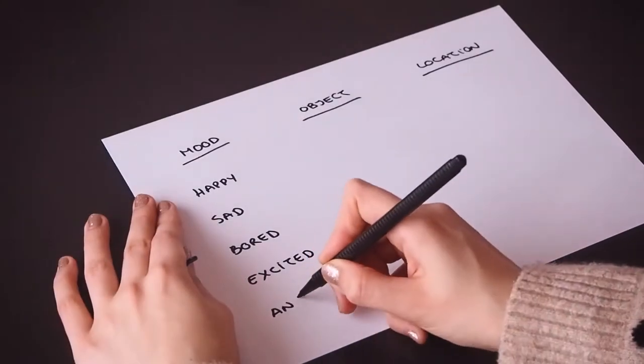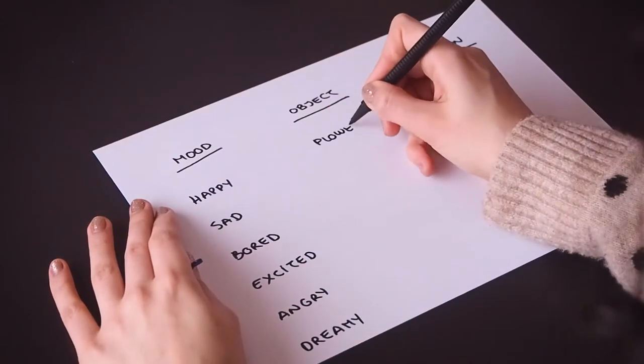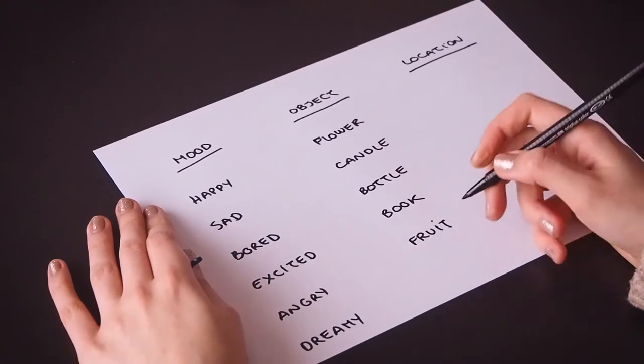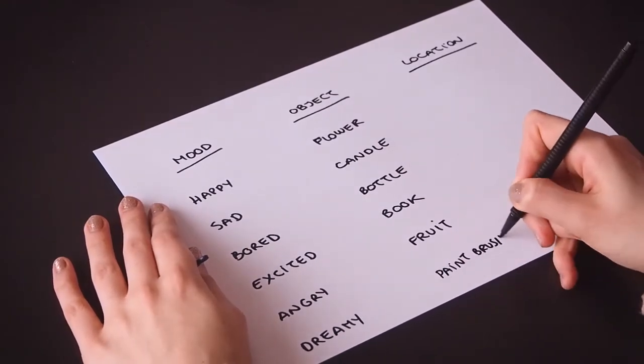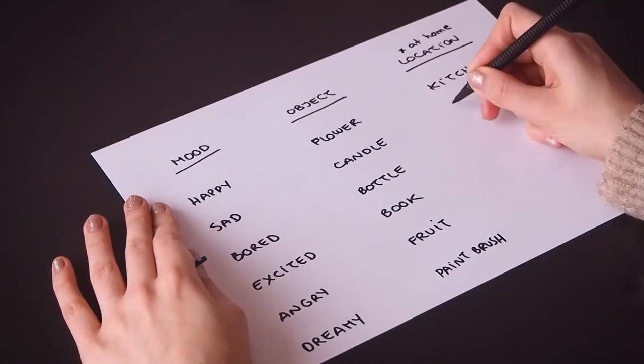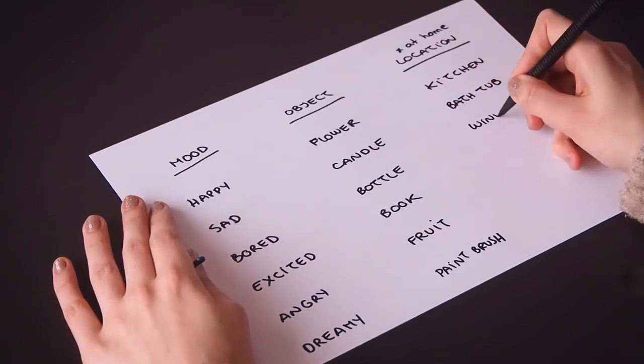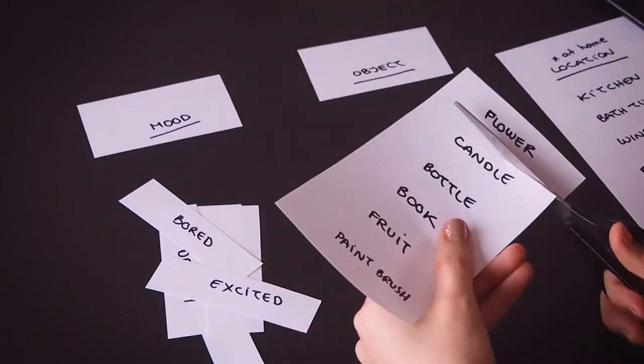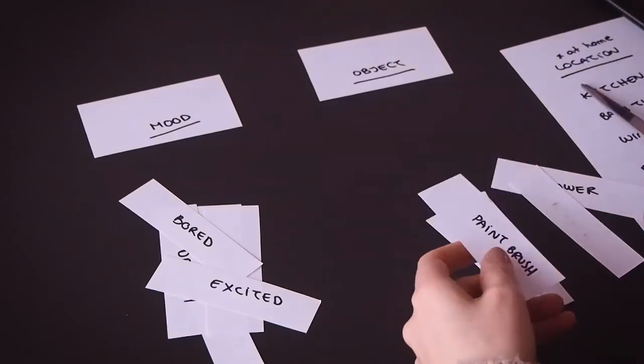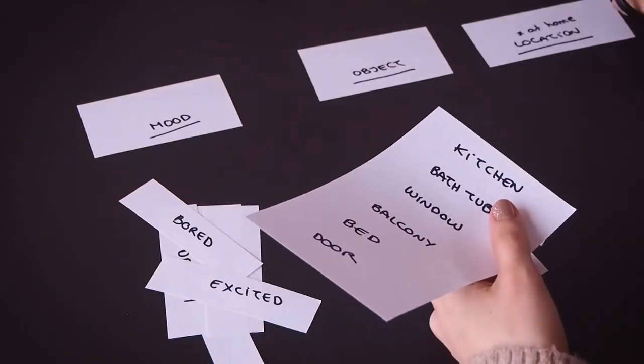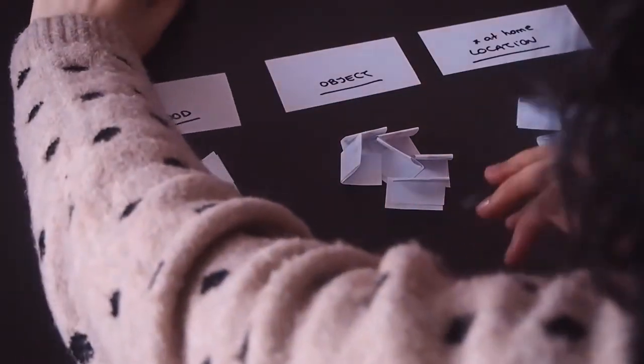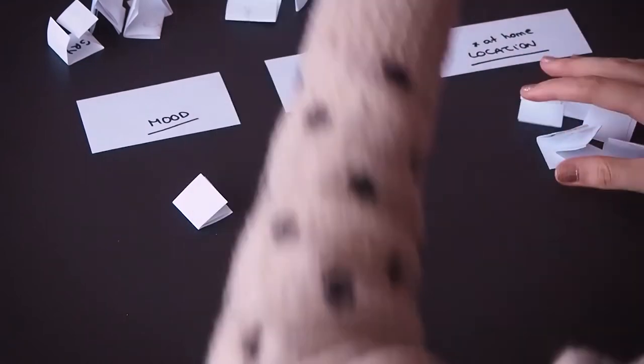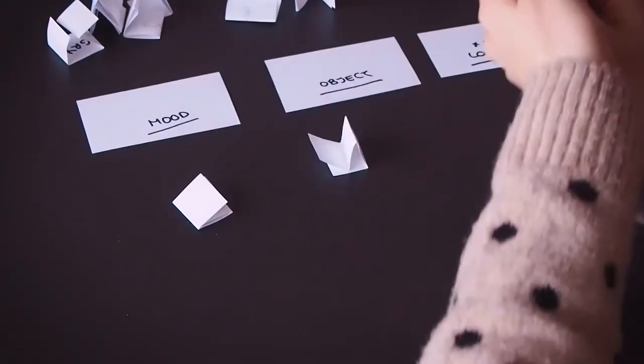For the second exercise, you will start by selecting the three main categories you want your picture to focus on. For instance, you want your picture to have a particular mood, an object, and a location. Then you're going to write down a few different alternatives for each of these categories. Then you're going to cut and mix each of the alternatives you came up with for each category and randomly, this is important, select one for each. With the combination you got, you need to create one image with those three elements.